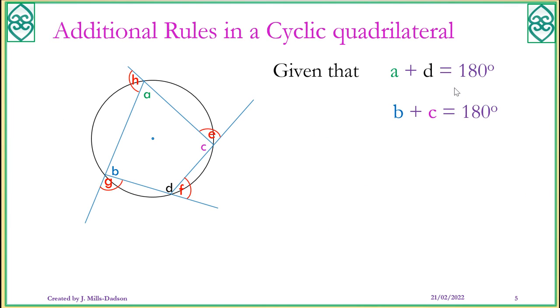Additional rule to cyclic quadrilateral also goes like this. The exterior angle is always equal to the opposite interior angle. So H is equal to D, G is equal to C, E is equal to B and so forth. That's this additional rule for you to note.